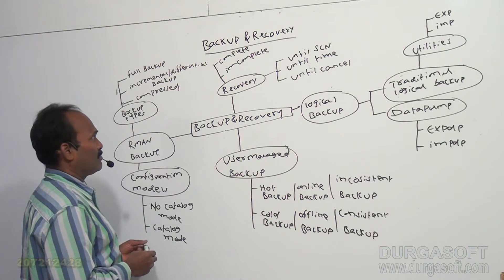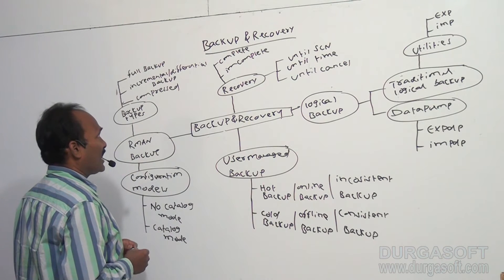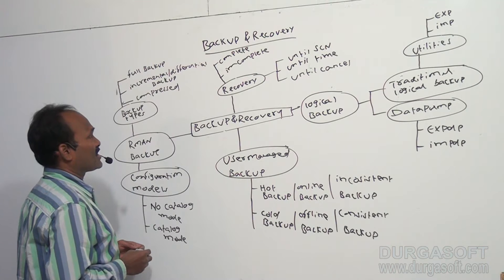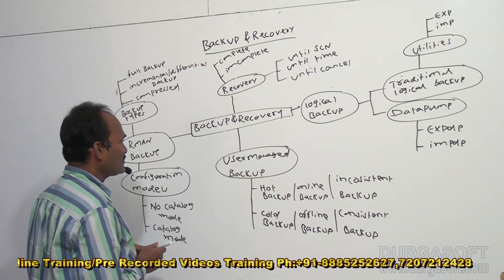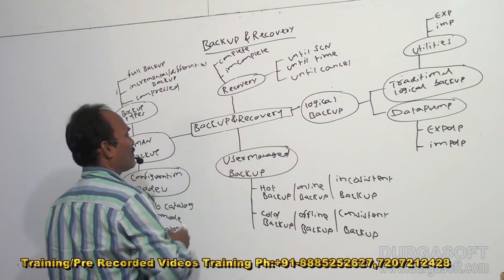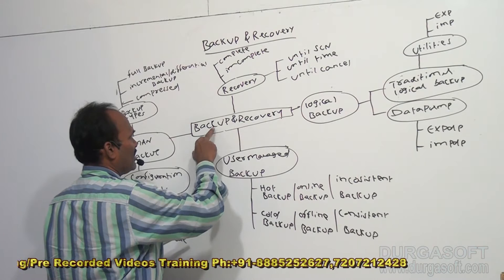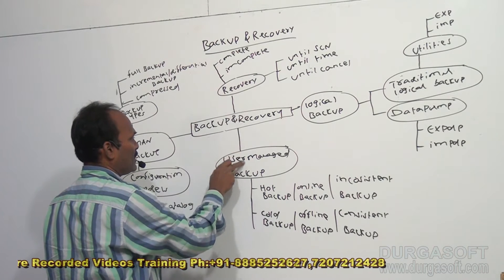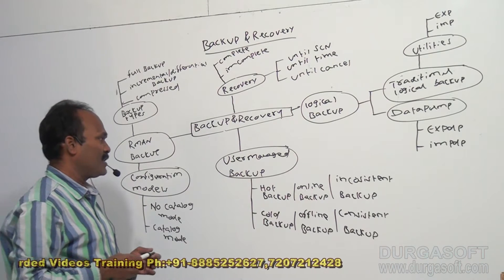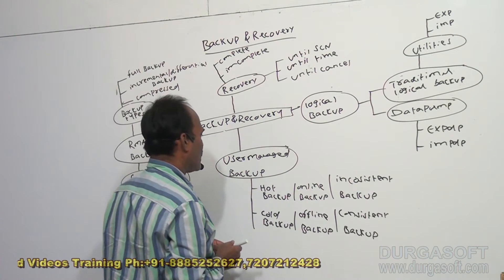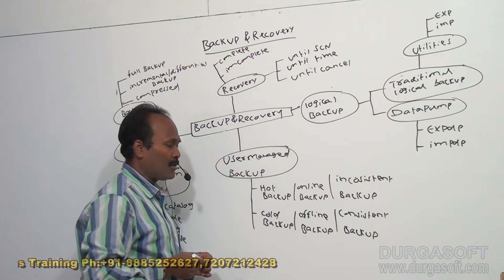There are different types of backup mechanisms. Backup and recovery can be of user-managed backup type. In user-managed backup, we are going to perform two types of backup mechanisms: one is hot backup and another one is cold backup.